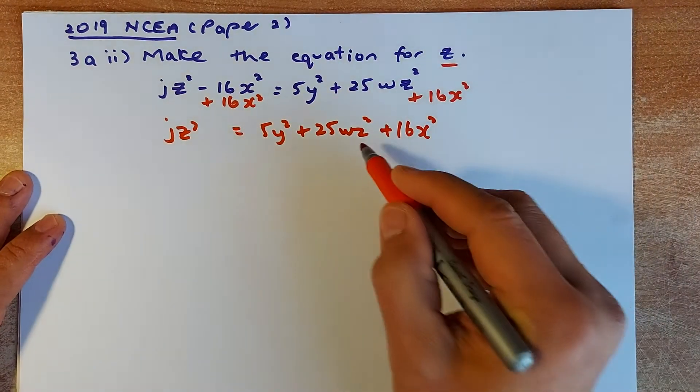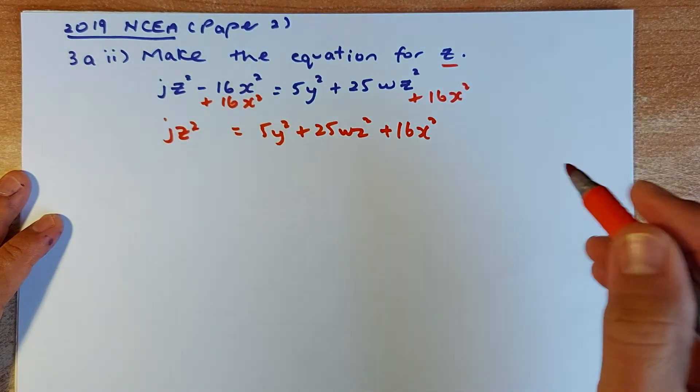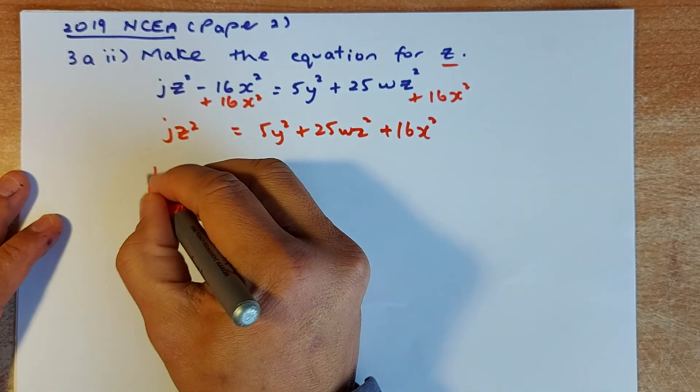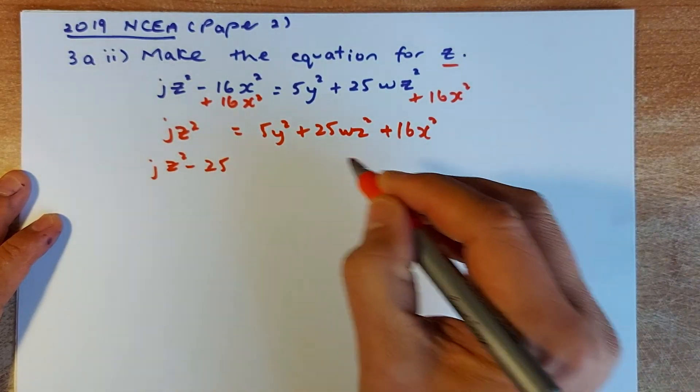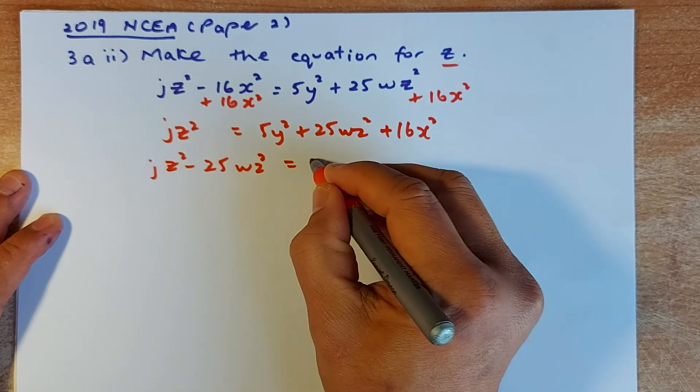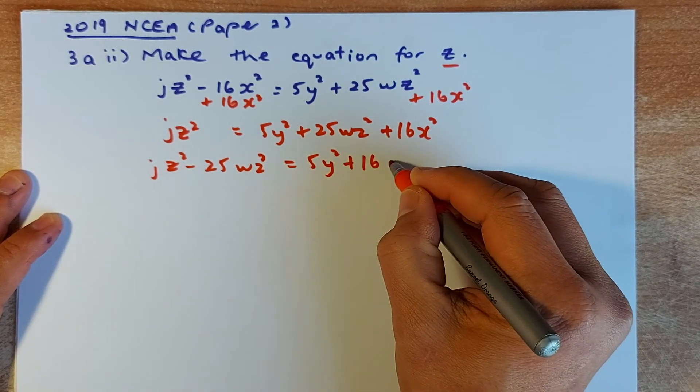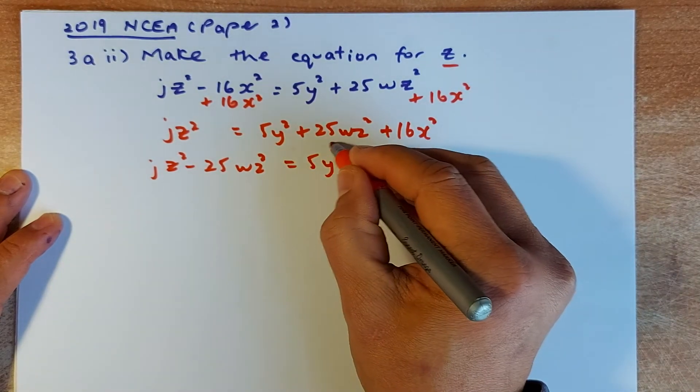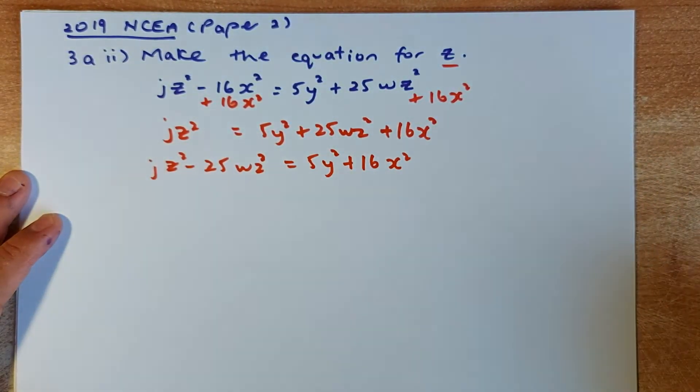The next step, because there's a Z there, you have to bring this to the left. So the thing you're going to do, you're going to minus them. So JZ² - 25WZ² equals to 5Y² + 16X². What we did is just minus 25YZ² on both sides of the equation. And that's the new equation.